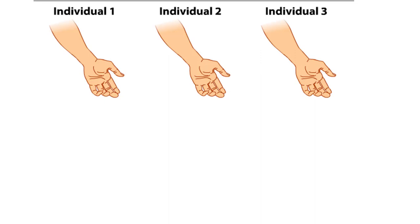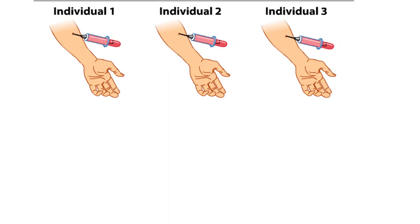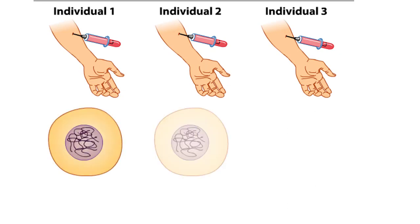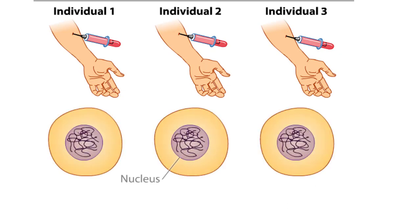To test a person's DNA, a researcher first needs a source of tissue. Most of the cells in a blood sample are red blood cells, which lack nuclei, but there are also a number of white blood cells, which do contain nuclei and chromosomal DNA.